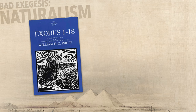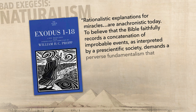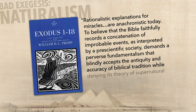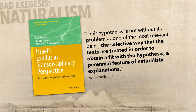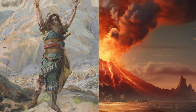William Propp puts his finger on an even bigger problem with naturalistic explanations: 'Rationalistic explanations for miracles are anachronistic today. To believe that the Bible faithfully records a concatenation of improbable events, as interpreted by a pre-scientific society, demands a perverse fundamentalism that blindly accepts the antiquity and accuracy of biblical tradition while denying its theory of supernatural intervention.' More recently, Mark Harris has noted the selective way that biblical texts are treated in order to obtain a fit with the hypothesis — a perennial feature of naturalistic explanations. There are chronological issues as well, since the eruption of Thera occurred a few centuries too early to fit the Bible's internal timeline. This misguided approach gets applied to other Bible passages with large-scale miracles as well, including Joshua's long day and Noah's flood, and faces the same defects in every instance.